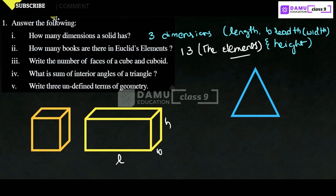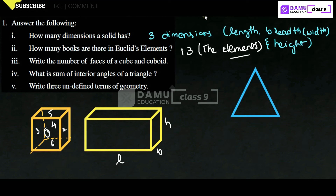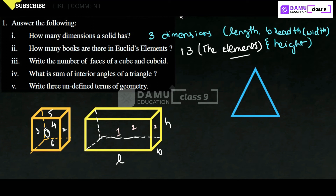Next: write the number of faces of a cube and a cuboid. For a cube: front is one face, then back — two, side — three, four, top — five, and bottom — six. For a cuboid similarly: front — one, back — two, sides — three and four, top — five, bottom — six. So the number of faces for both cube and cuboid is six.